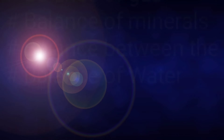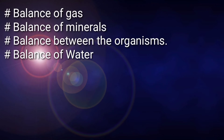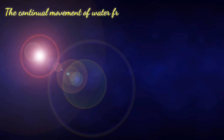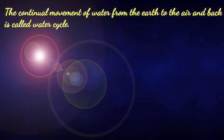All the things that make up the environment not only depend on each other but they maintain a perfect balance. Nature maintains the balance of gases, balance of minerals in the soil, and even the balance between organisms. Nature's way of maintaining the balance of water is through a process called the water cycle — the continual movement of water from the earth to the air and back to the earth.